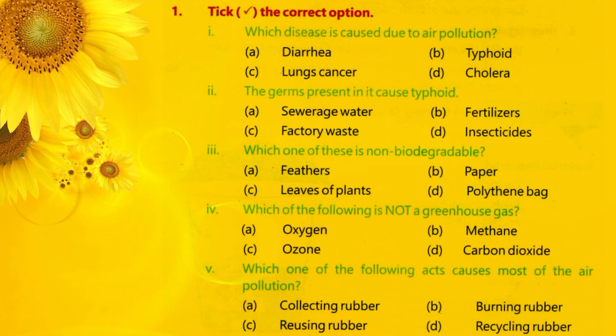Question 2: The germs present in it cause typhoid. In mein mojood jarasim typhoid ka sabab bante hain. Options: A. Sewerage water, B. Fertilizers, C. Factory waste, D. Insecticides. Correct option is A — Sewerage water.